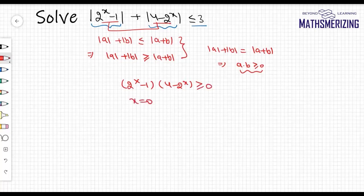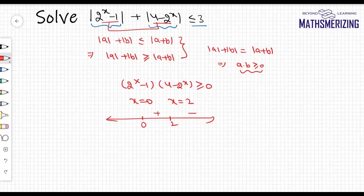Plotting x = 0 and x = 2 on the number line, the sign pattern is minus, plus, minus. We need ≥ 0, so the answer is x ∈ [0, 2].